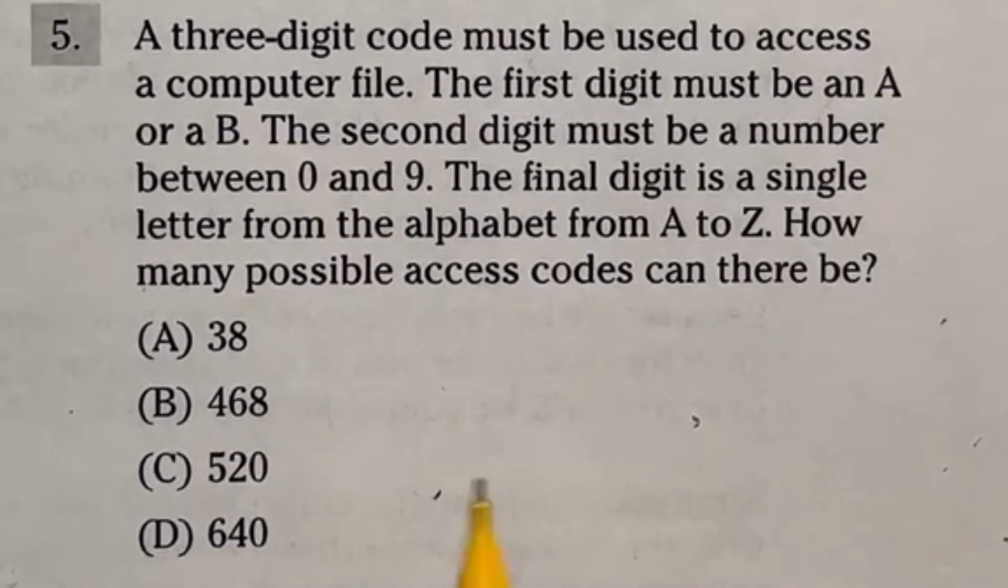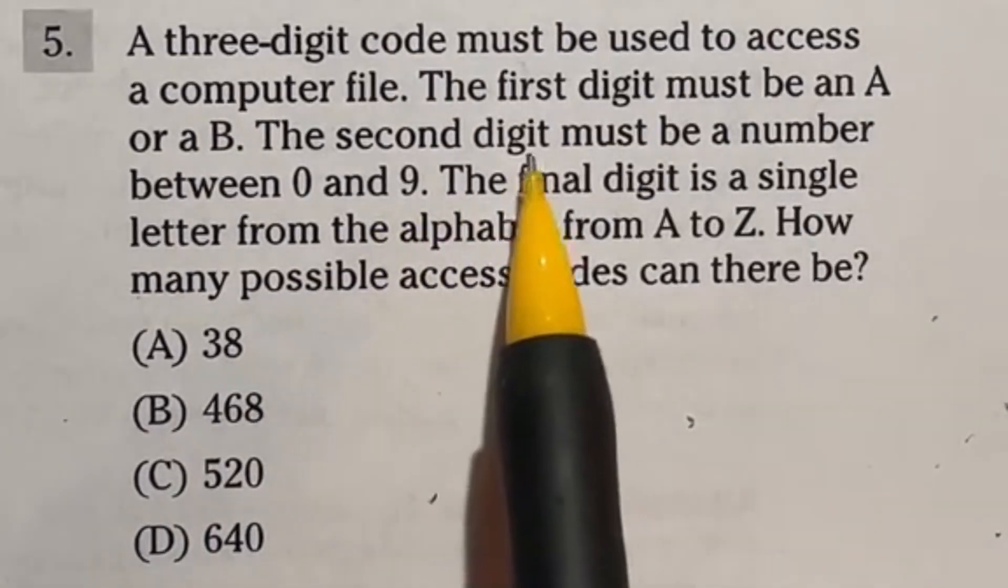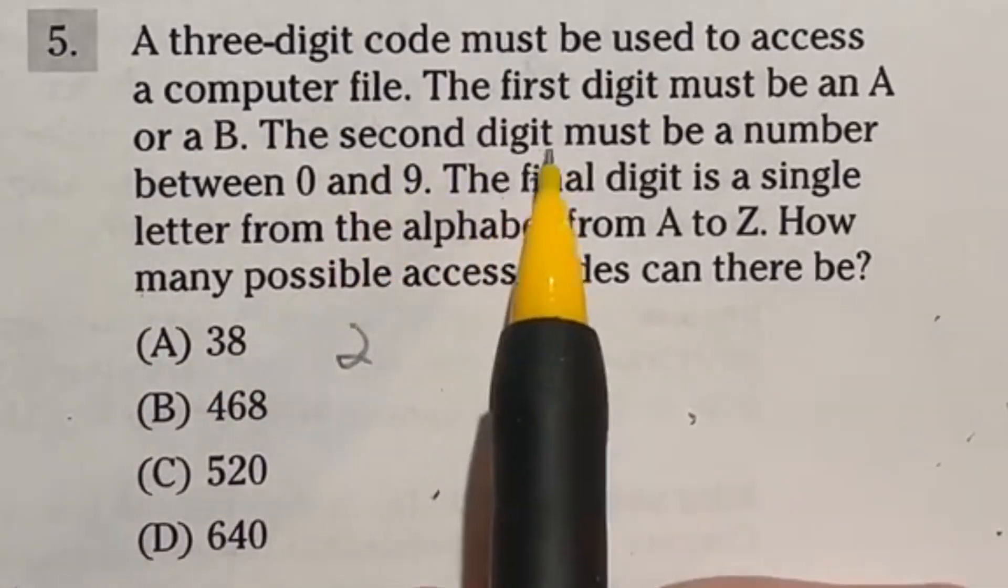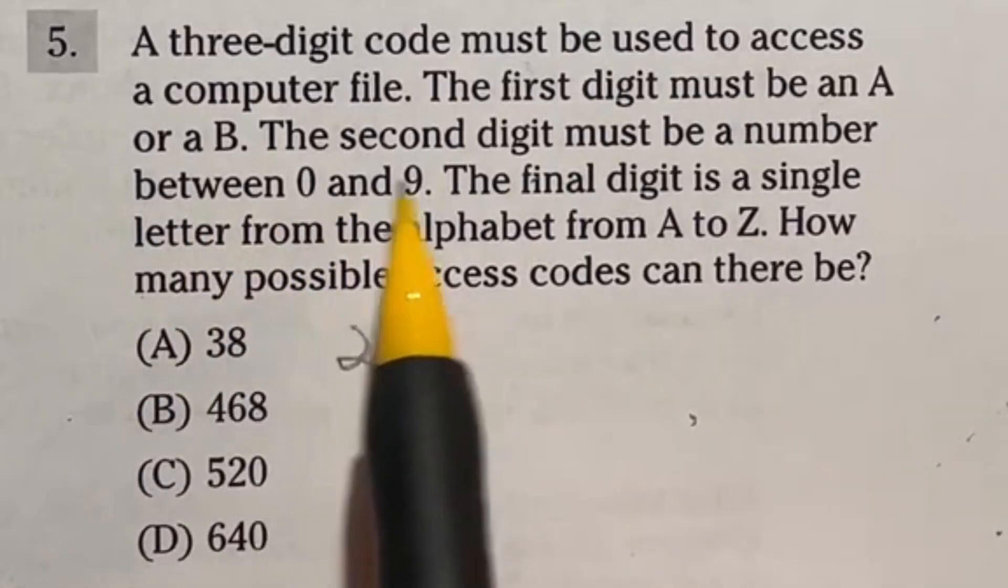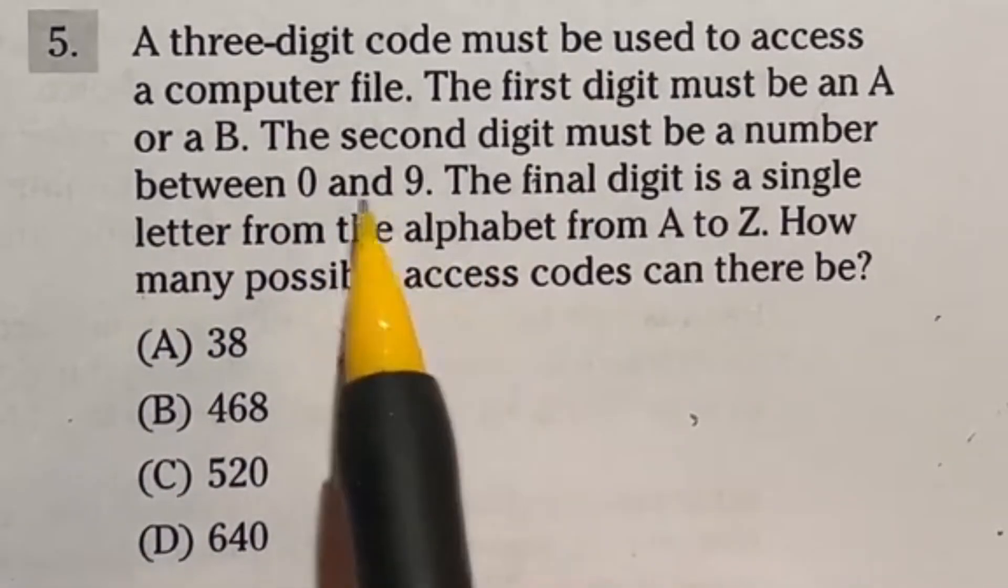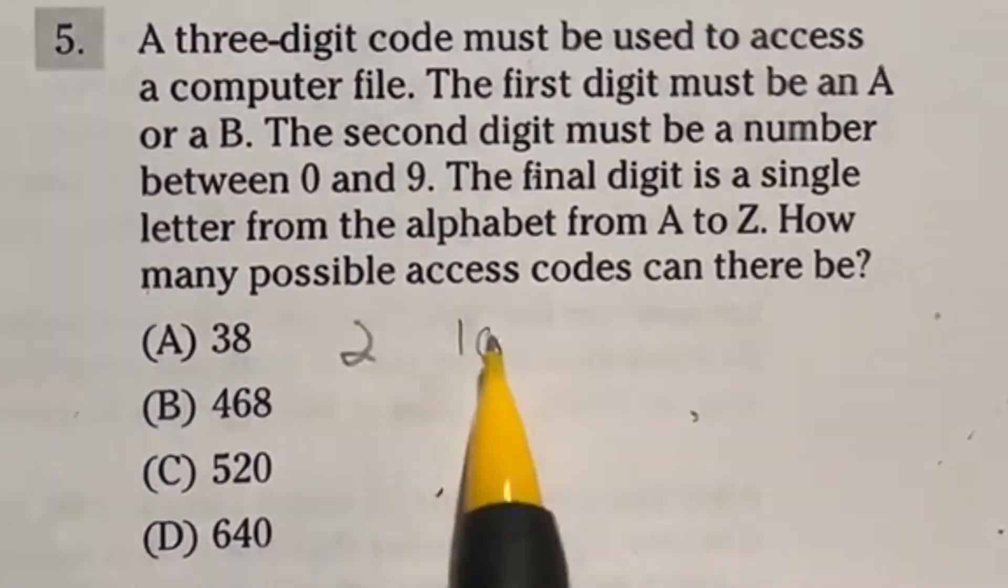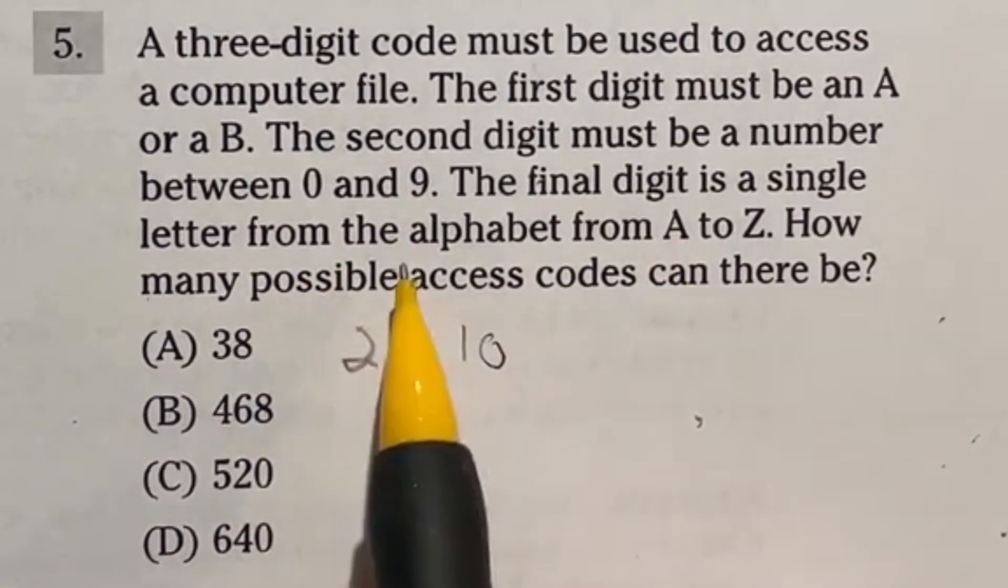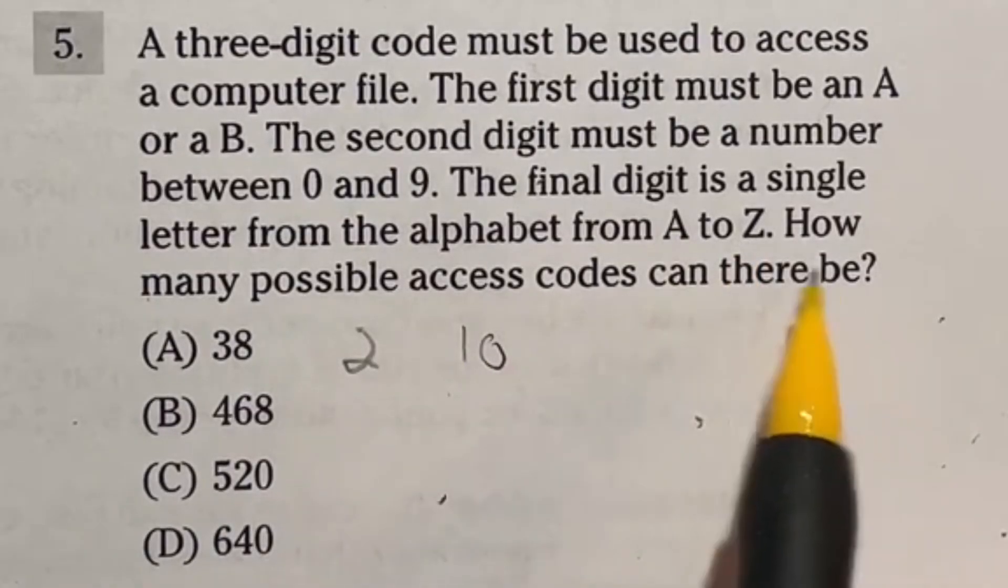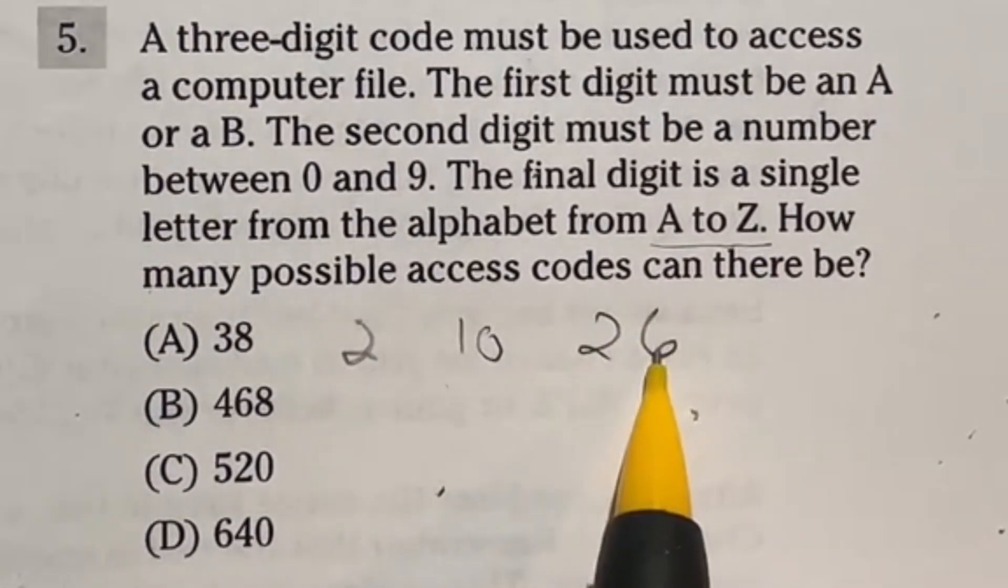Here's a difficult one. Let's take a look at number five. It says a three digit code must be used to access computer file. The first digit must be an A or B. So that's two options. The second digit must be a number between zero and nine. So if it's from zero to nine, that's actually 10 different options you can have there. One through nine would make nine, zero would be 10. And then it says the final one is a single letter from the alphabet A to Z. How many possible access codes can there be? Well, A to Z, there is a total of 26 letters in our alphabet.